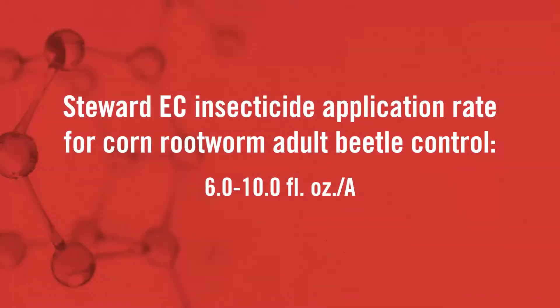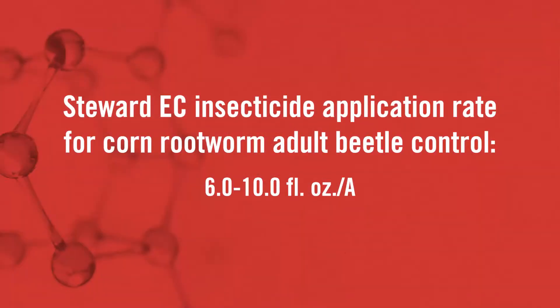It's also gentle on beneficials, so you don't have to worry about causing mite or aphid flare-ups as a result of using this material. Typical application rates for Steward EC insecticide are anywhere from 6 to 10 fluid ounces per acre, depending on pest pressure. We are usually recommending 8 to 10 fluid ounces per acre this year because the populations have been very high as a result of a lot of snow cover this past winter.